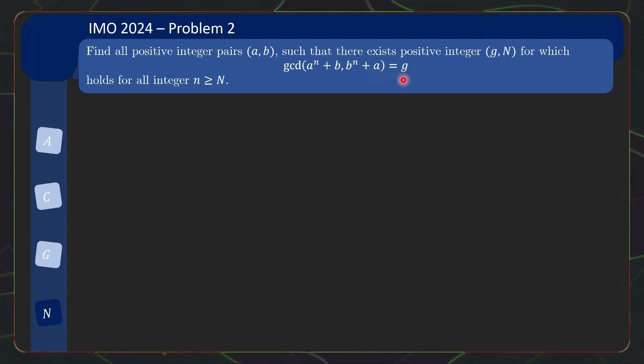Because if it eventually becomes constant, then you can let g be that constant gcd and capital N is the threshold beyond which the gcd is constant. So once again, you want to find a, b such that this gcd expression eventually becomes constant as n increases from 1 to infinity.